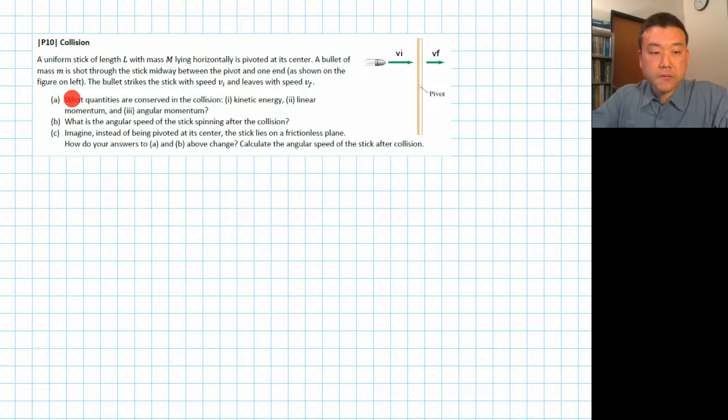So it's important to identify what quantities are conserved in this collision. So part A walks you through the three quantities that you would consider conserving: kinetic energy, linear momentum, and angular momentum. So you just have to work through what are the conditions for conserving each of these, and are those conditions met.